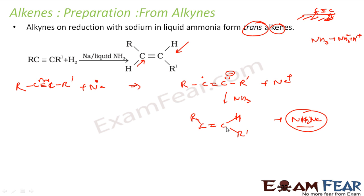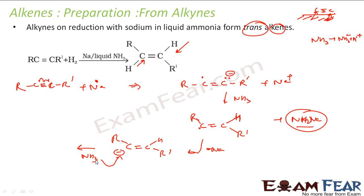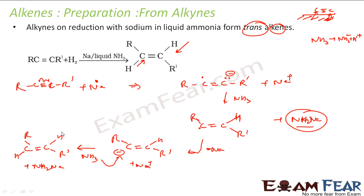Now a second sodium radical is added. This second sodium again gives its electron to the remaining carbon radical, making it a carbanion (C⁻). Then a second NH3 adds another hydrogen to this carbanion, forming NH2⁻ which reacts with Na⁺ to give NaNH2. The result is a trans-alkene. The two hydrogen atoms add from opposite sides, giving the trans geometry.